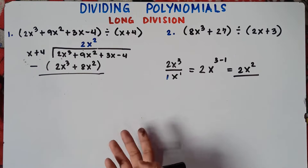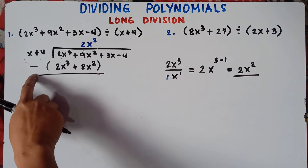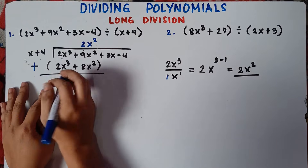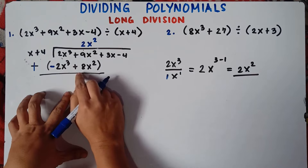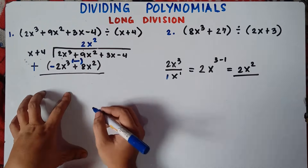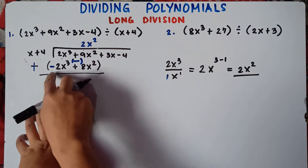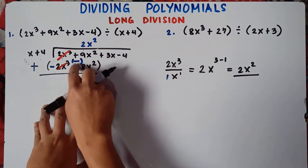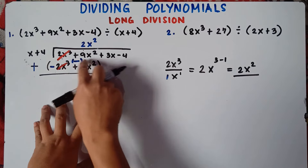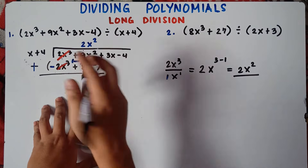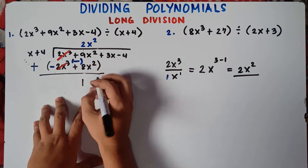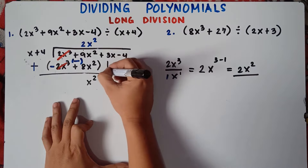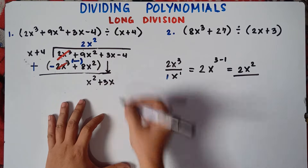So 9 minus 8 is 1, giving x². Just copy the literal coefficient x², so we have 1x² or simply x². Then bring down 3x, giving us x² + 3x to work with next.